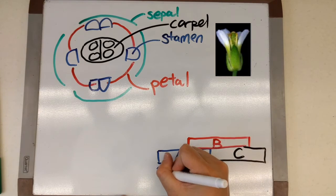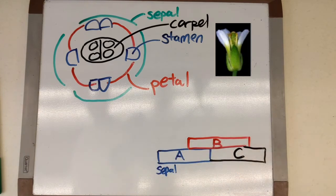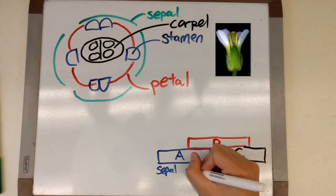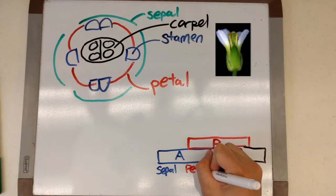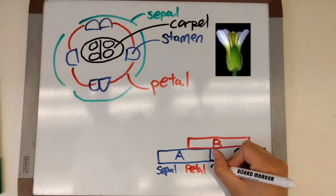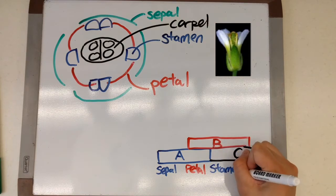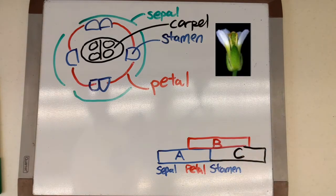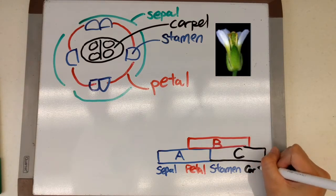Now these three gene classes A, B, and C in combination will code for these four different structures. Class A genes on their own code for sepals. Class A and B genes together code for petals. Class B and C genes together code for stamen. And class C genes on their own will code for carpals.